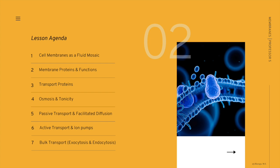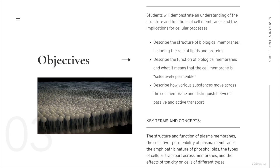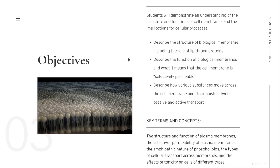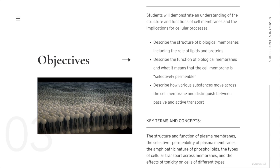This lecture will dive further into the structure and function of the plasma membrane and the implications for cellular functions. We'll cover the plasma membrane, membrane proteins and functions, osmosis and tonicity, and passive and active transport including bulk transport across the plasma membrane. After this lecture, you will be able to demonstrate an understanding of the structure and functions of cell membranes and the implications for cellular processes.